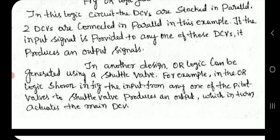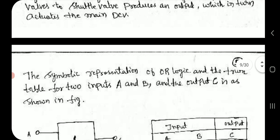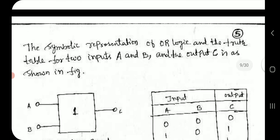In another design, OR logic can be generated using a shuttle valve. For example, in the OR logic shown in figure, the input from any one of the pilot valves to shuttle valve produces an output which in turn actuates the main direction control valve. In this example, the symbolic representation of OR logic and the truth table for two inputs A and B and the output C is as shown in figure.